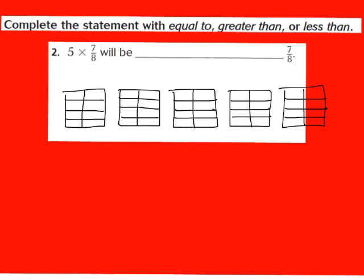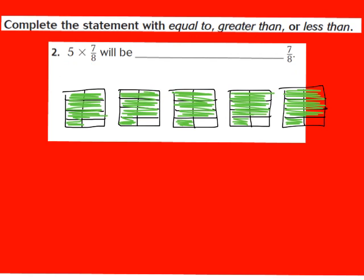Now I have 5 boxes each divided into 8 equal parts because our fraction is 7/8. I'm going to shade in 7 of those 8 equal parts in each rectangle. Go ahead and pause the video and shade in 7/8 for each of those 5 rectangular boxes. When we count, we have 7 parts shaded in each of the 5 rectangles — 7 times 5 gives me 35. So when I multiply 5 times 7/8, I get 35 as my numerator because 35 of those boxes are shaded in. Our denominator stays the same, giving us 35/8 as the product.